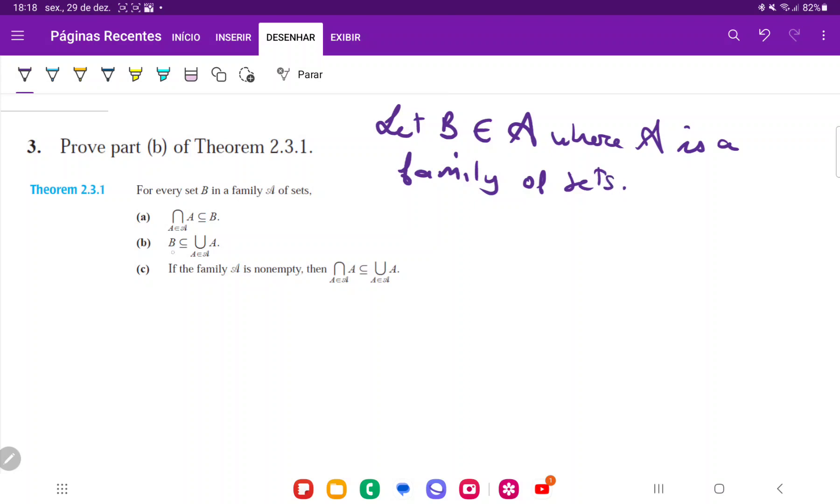So what we're trying to show is we're trying to take some element that is in B, and then we're trying to show that that element is here, and therefore B is a subset of the union.